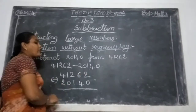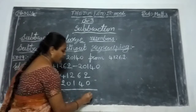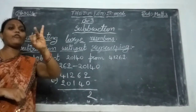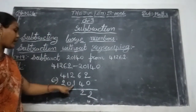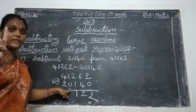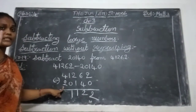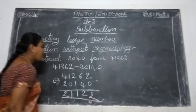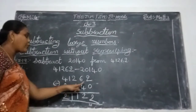Take 2 fingers — second number is 0, not possible to close any. So 2 is the answer. Next, take 6 fingers, close 4 — remaining is 2. Next, take 2 fingers, close 1 — remaining is 1. Take 1 finger, close 0 — answer is 1, same number. Take 4 fingers, close 2 — remaining is 2. So the answer is 21,122. This is without regrouping with large numbers.